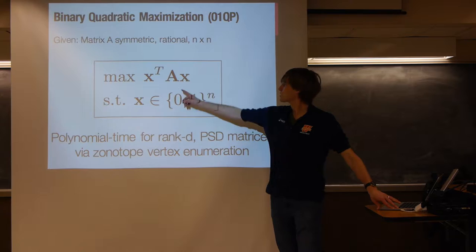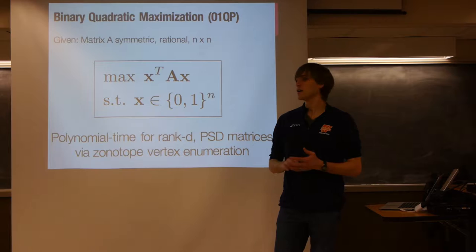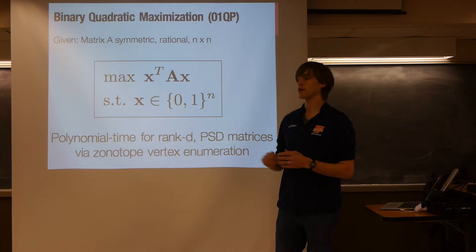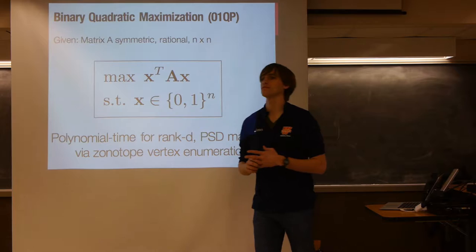The interesting thing is: even though this is NP-hard in general, if you make the assumption that matrix A is low rank — some low rank D — and positive semi-definite, then it turns out this is a problem that can be solved in polynomial time by enumerating the vertices of something called a zonotope.